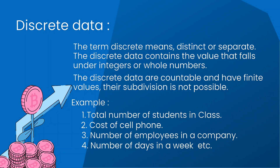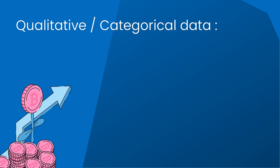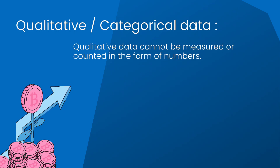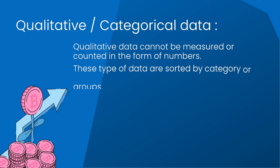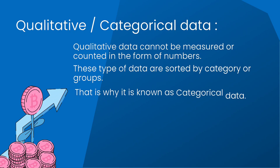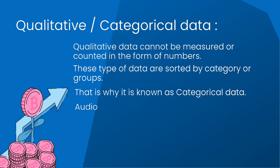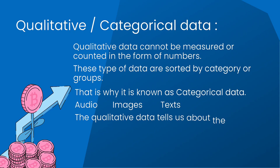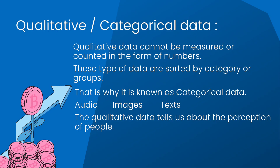The second broad type of data is qualitative or categorical data. Qualitative data cannot be measured or counted in the form of numbers. These types of data are sorted by category or groups, which is why it is known as categorical data. Data like audio, images, and text are considered qualitative data, and it tells you about the perception of people.